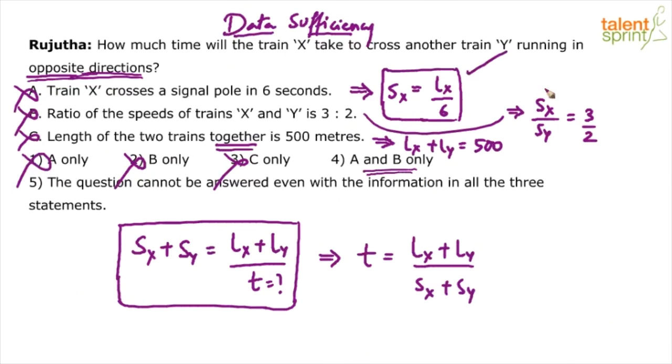Because even if you look at A and B, what do we have? We have got two equations. One equation is Sx equals Lx by 6. The other equation is Sx by Sy equals 3 by 2. Two equations and how many variables? Three variables: Sx, Sy and Lx. Two equations and three variables can be solved? No. Even if you solve for these three variables by any chance, first of all it is impossible. But even if you solve, we need the fourth variable which is Ly. Not known to us. So how will A and B together give the answer? No. Option four also will not give the answer.